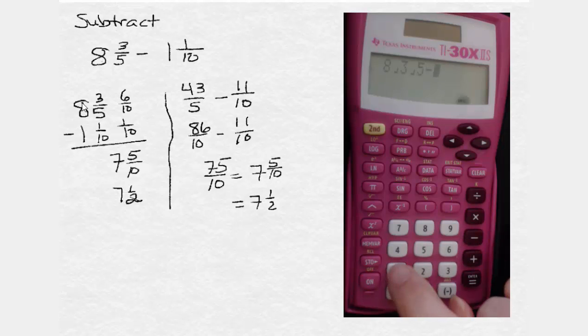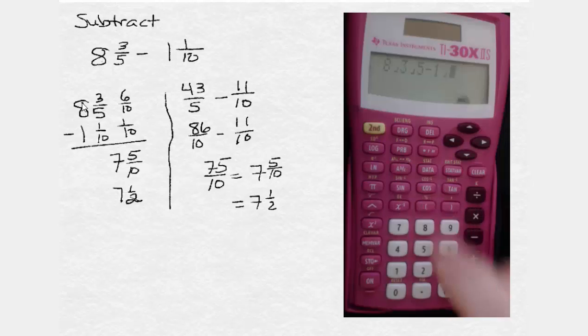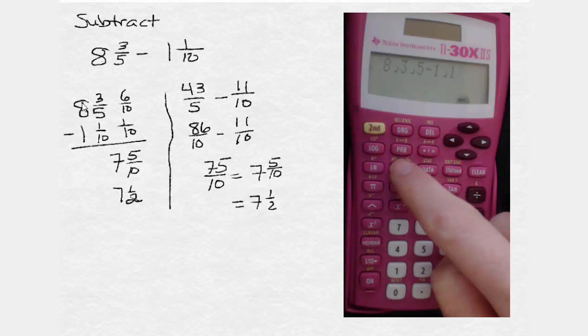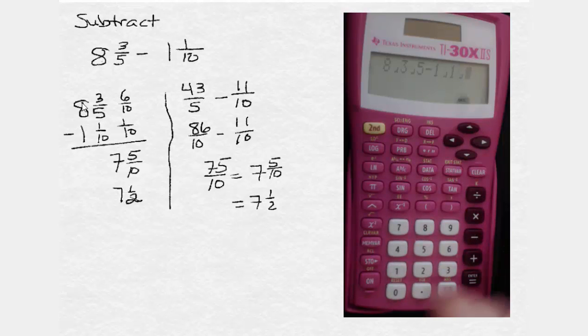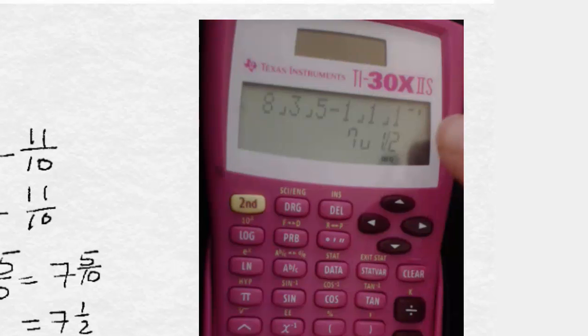Now we're going to hit subtract. And we're going to do 1 and repeat the process, hit the fraction key, 1 again, for 1 tenths. Hit the fraction key, enter the 10, and hit enter. And what we see here is 7 and 1 half on the screen.